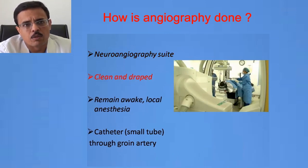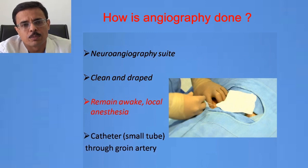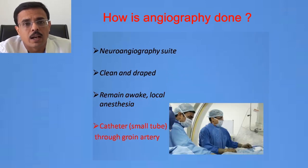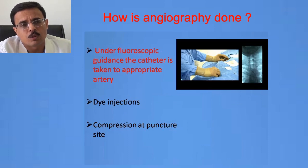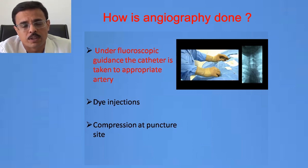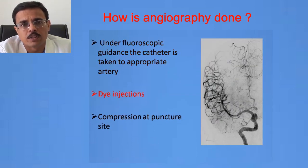The patient is initially always awake; they are cleaned and draped with sterile sheets. They remain awake during the procedure, but we apply local anesthesia around the leg blood vessel — a painkiller injection — so that the patient doesn't feel any pain. Through that small area we insert a tube known as the catheter through the groin blood vessel, and under fluoroscopic x-ray guidance we take the catheter to the appropriate blood vessel we want to study. Doctors can see on the screens where the catheter is going so that it doesn't injure any normal blood vessel, and then the dye injection is done to obtain DSA pictures.